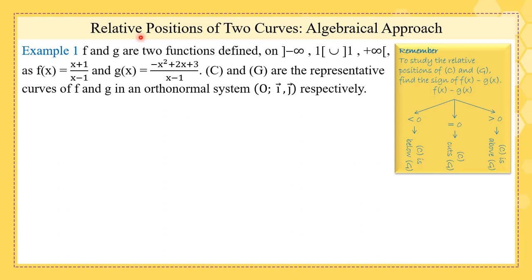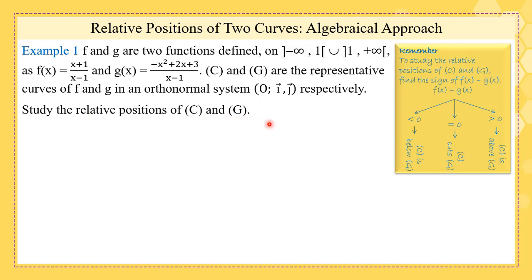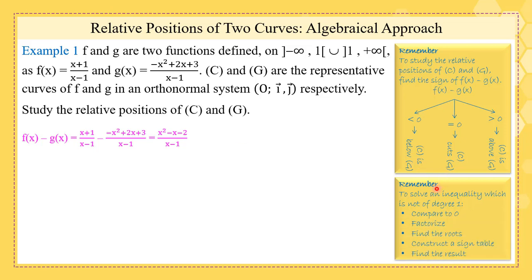Let's take an example. F and G are two functions defined as follows, and C and G are their representative curves. The question is to study the relative positions of C and G. We find F of X minus G of X and get an expression. To study its sign, remember: to solve an inequality not of degree 1, we compare to 0, factorize, find the roots, construct a sign table, and find the result.